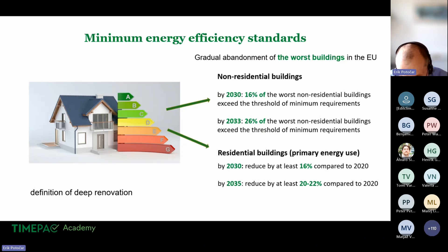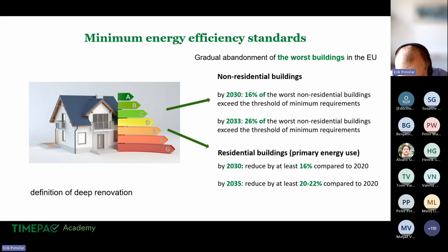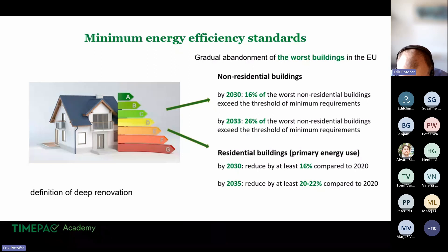For non-residential buildings, member states must set thresholds so that by 2030, 16 percent, and by 2033, 26 percent of the national building stock will exceed the minimum energy efficiency threshold. For residential buildings, member states will need to reduce average primary energy consumption by at least 16 percent compared to 2020 by 2030, and by at least 20 to 22 percent by 2035.